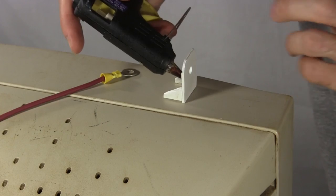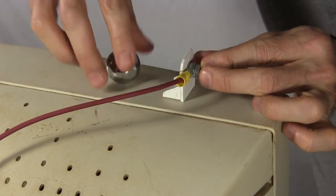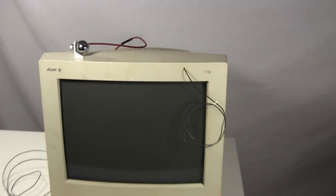I hot glue together a plastic holder for the bolt. I put the high voltage wire's connector on the bolt, and put the bolt in place, and then the ball. And the high voltage side is done.